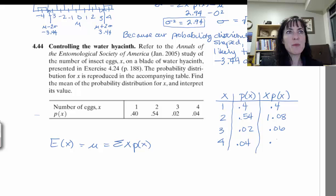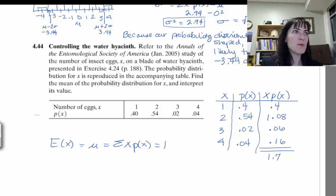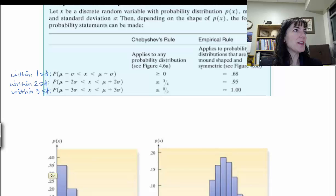Add those up, I get 1.7. So my mean is 1.7, my expected value. So to interpret, that's going to be the key there.